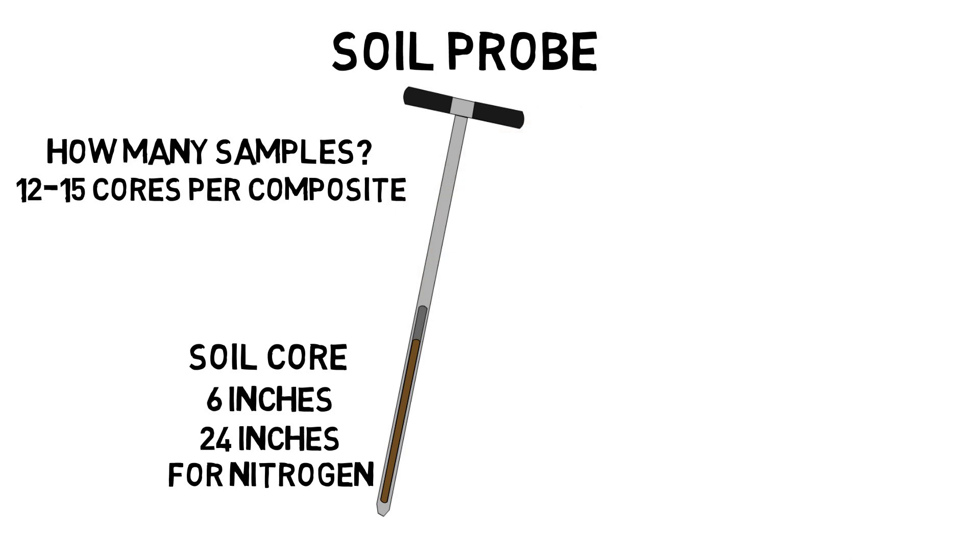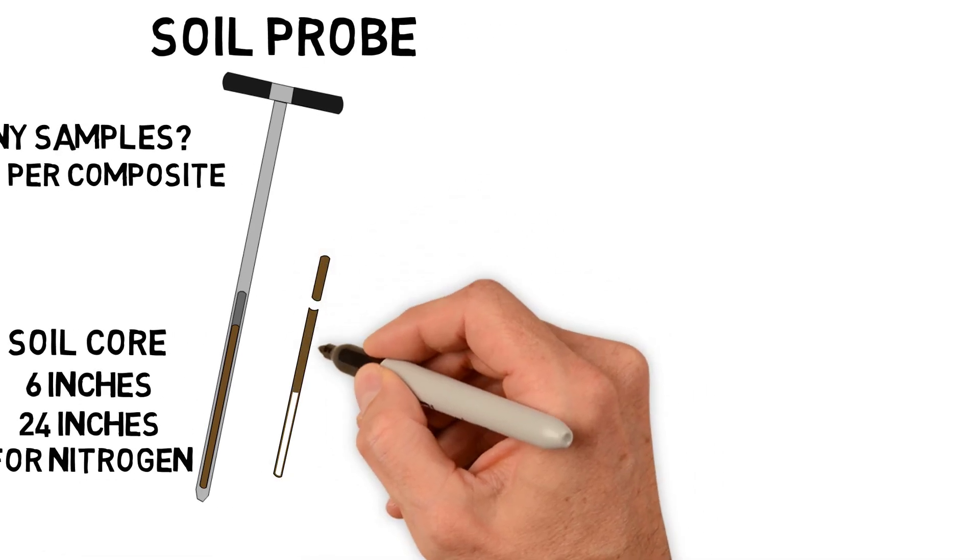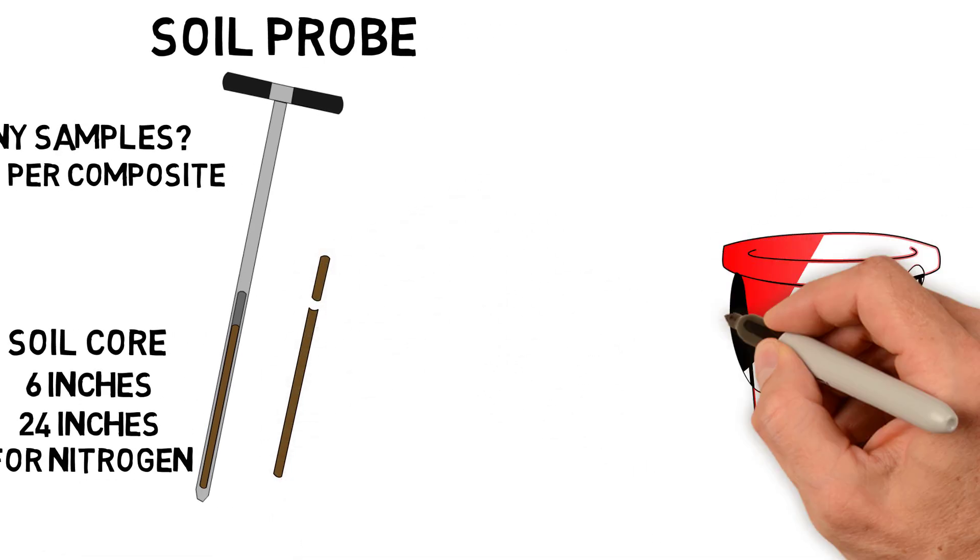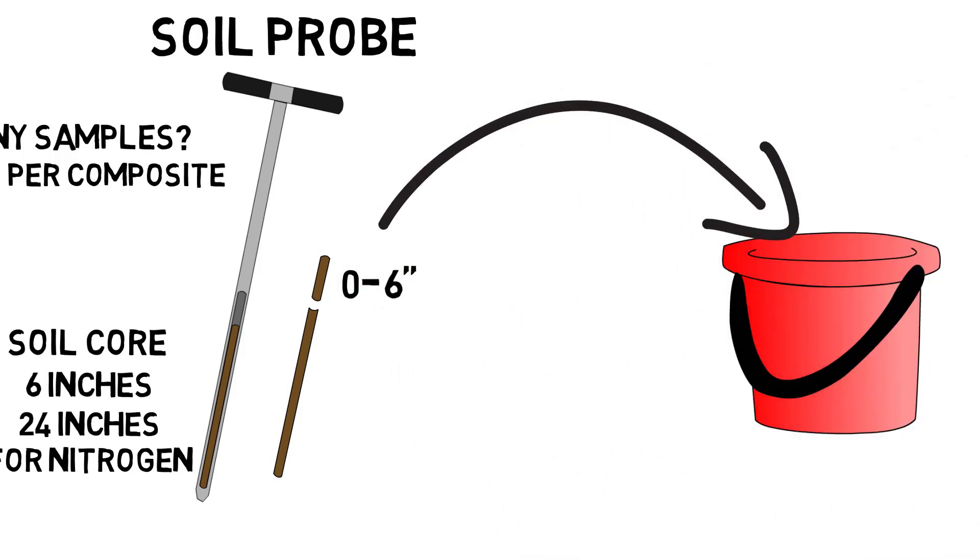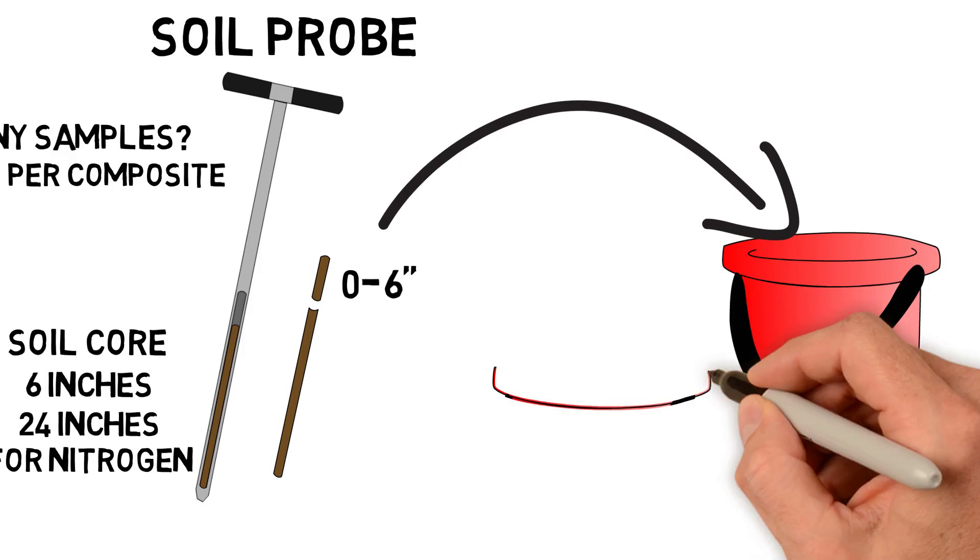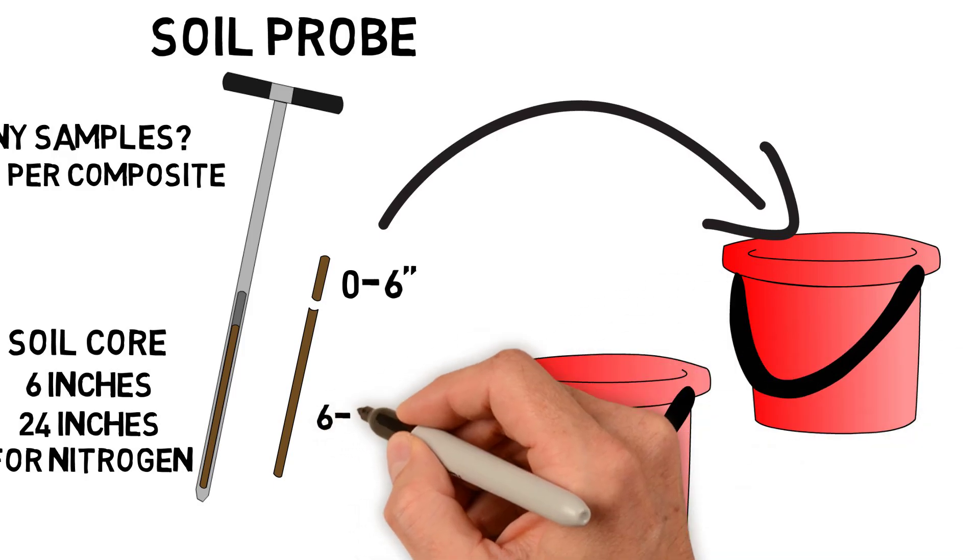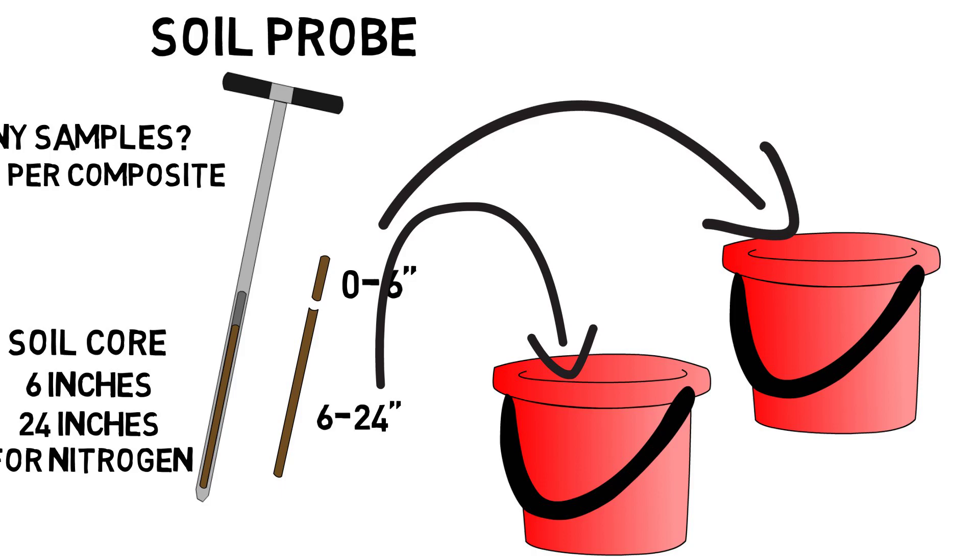If you're sampling down to 24 inches, you want to separate these out into two different composites and have two different buckets, one for each. In one bucket, you'll put the 0 to 6-inch samples. Again, you'll have about 12 to 15 cores, and you'll mix these together. And then the other bucket will be for your 6 to 24-inch sample. You'll send these composites to the lab individually.